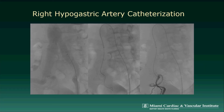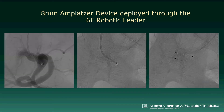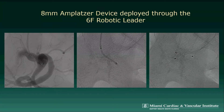The right hypogastric artery was subsequently selected with the leader catheter, and a selective angiogram was performed as demonstrated on the third static image here. This was followed by advancement of an 8-millimeter Amplatzer device into the hypogastric artery and easy deployment.